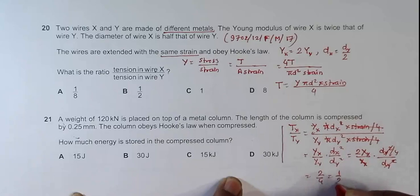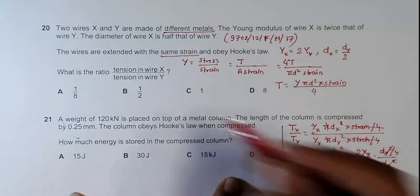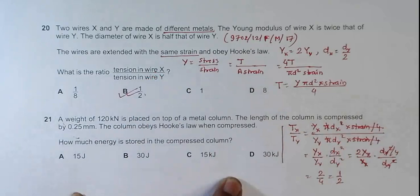What remains is 2 over 4, which equals 1 over 2. The correct answer is choice B, which is 1 by 2.